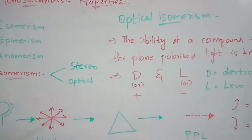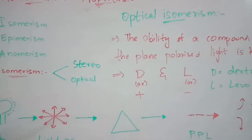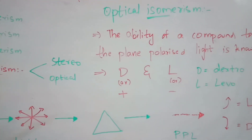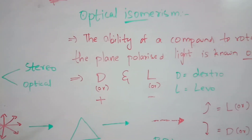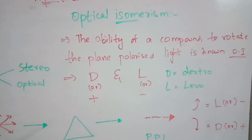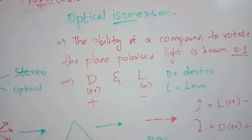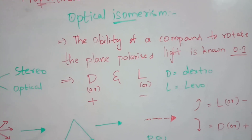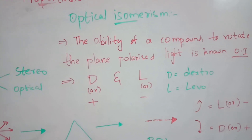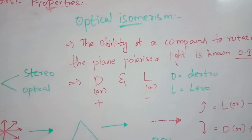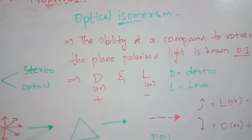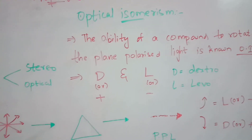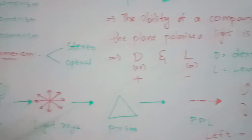Optical isomerism is defined as the ability of a compound to rotate plane polarized light. To understand this, consider a light bulb: when switched on, it emits light rays traveling in many directions — this is polychromatic light.